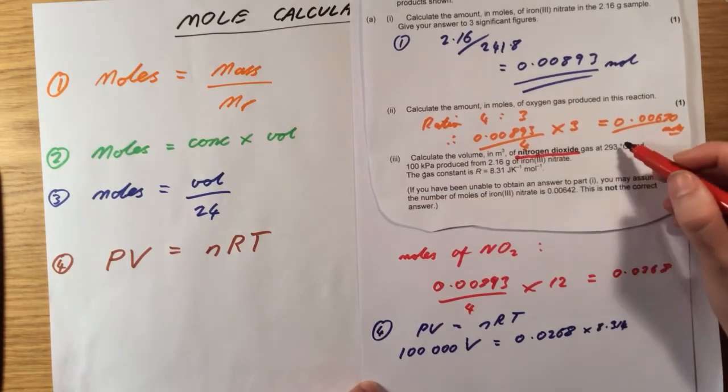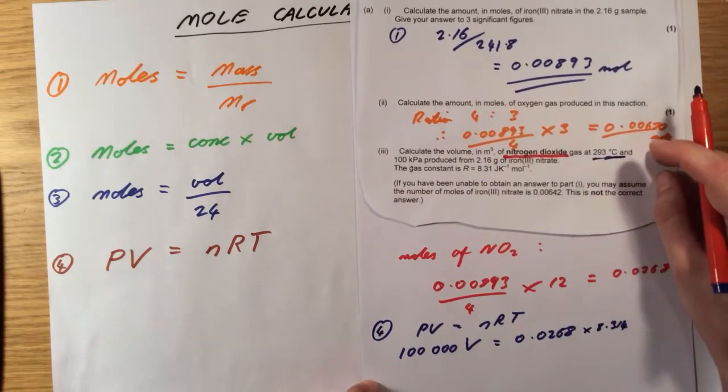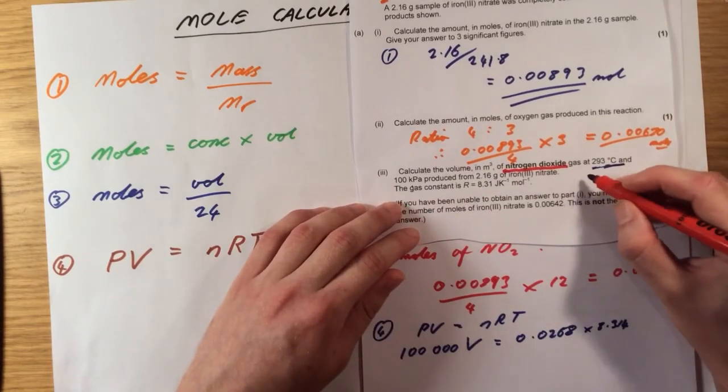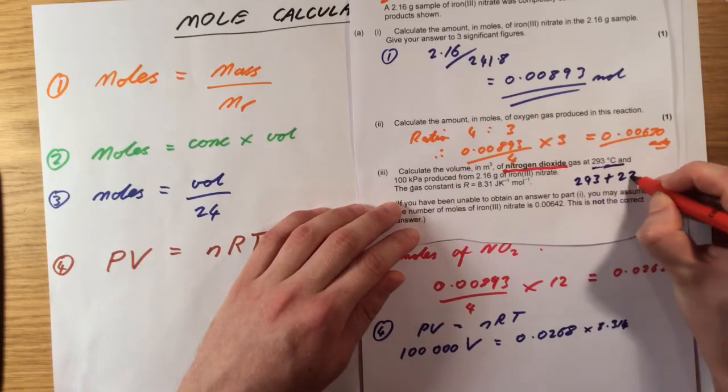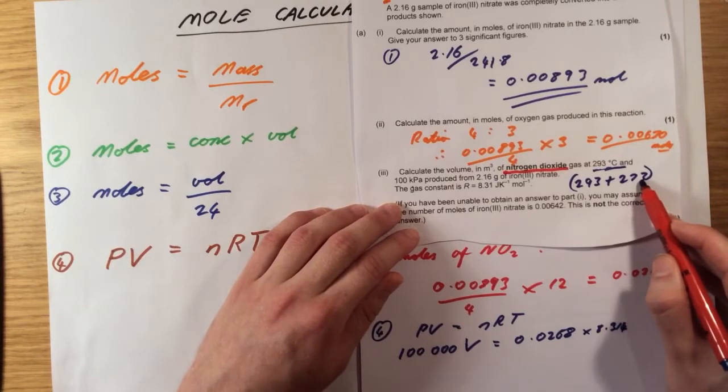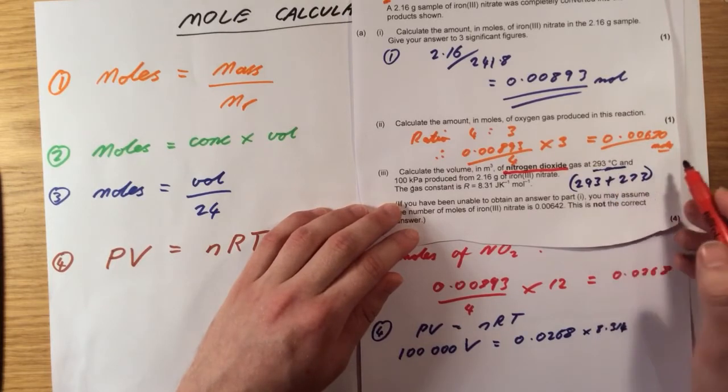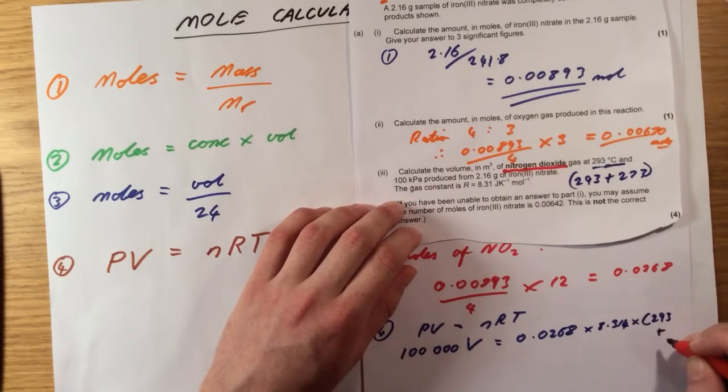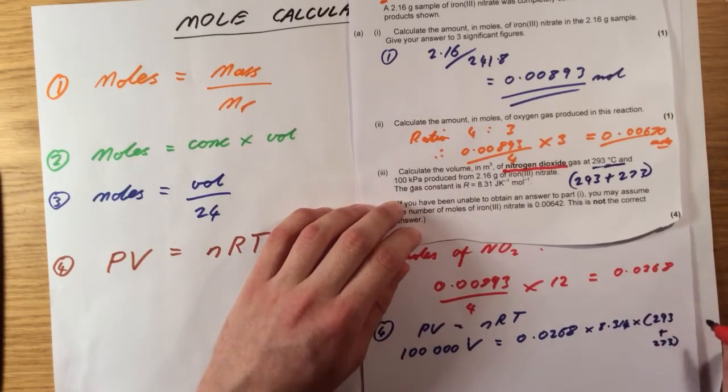There's a trick here. We do not want the temperature in degrees C for this calculation. We want it in Kelvin. To get from degrees C to Kelvin, we just add 273. So plus 273. The reason we do this is that 273 Kelvin is the same as 0 degrees C. So that's going to be times 293 plus 273.